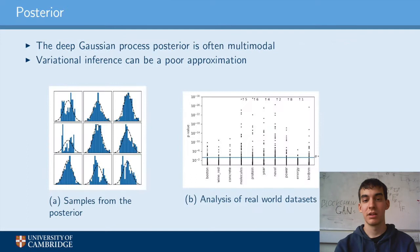In order to do Bayesian inference, we need to approximate the posterior distribution of the deep Gaussian process. Previous works used variational inference with a Gaussian approximation to the posterior. However, we analyzed the posterior and found that this approximation can be problematic because the posterior is often multimodal.